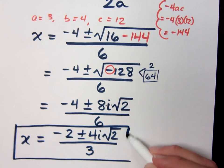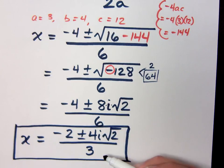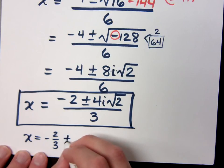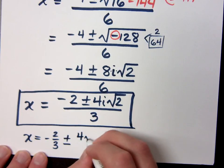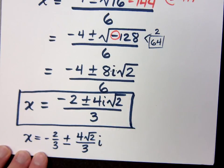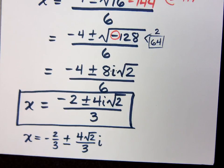Now, this is totally acceptable to me on a test for you to write this. If you're doing things in my math lab, it may have you separate this and rewrite it to say the real part, which is negative 2 thirds. And then plus or minus 4 square roots of 2 over 3i, like that. It's kind of weird. It's kind of wonky. But that's sometimes how they want you to do that.